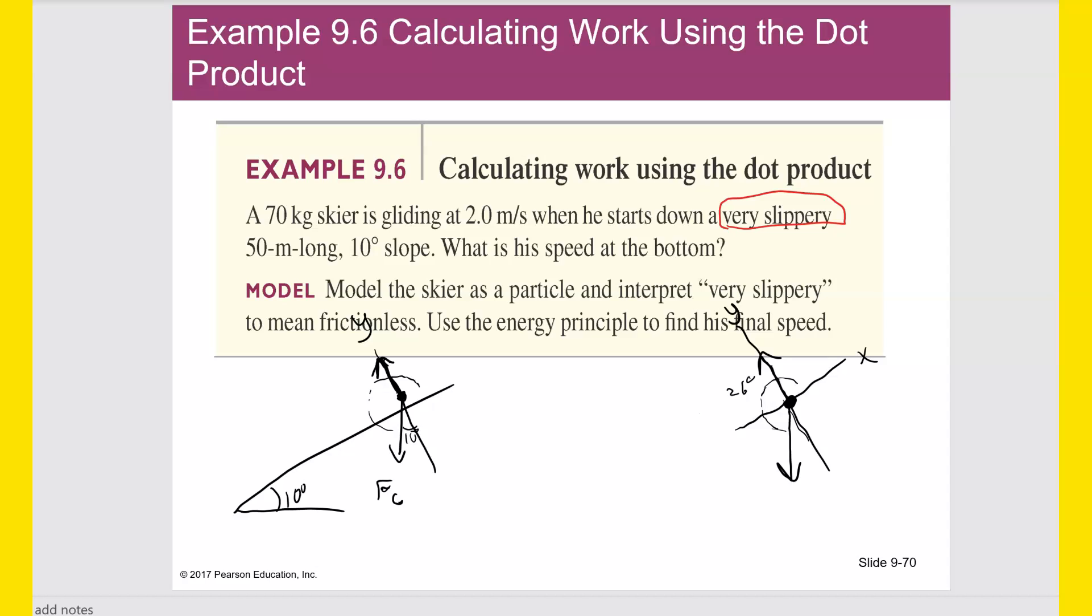And then we would say that equals ma. We would be able to figure out what that is. We would know what m is and we would then solve for a. And once we know a, then we can use our kinematics equations to find speed. All right, so you know you can do that. You've done it before. But this wants us to now use the work energy principle to do this problem.